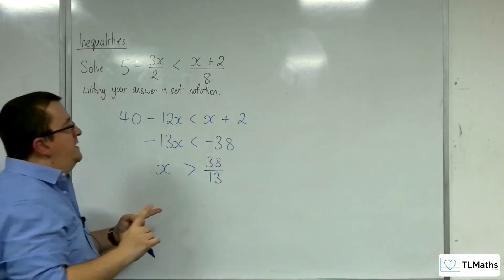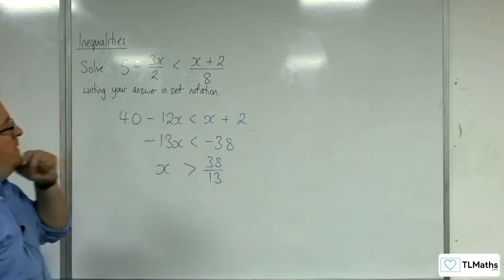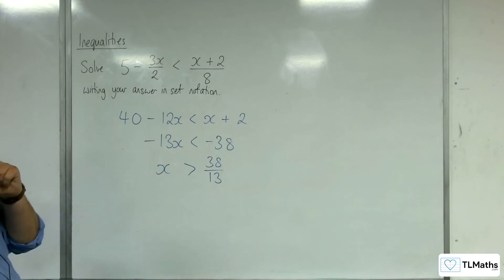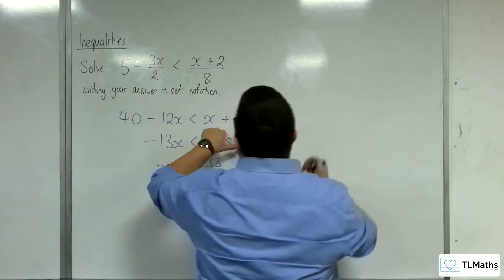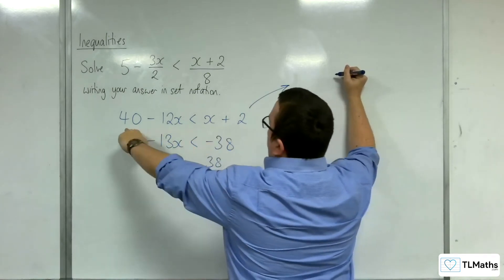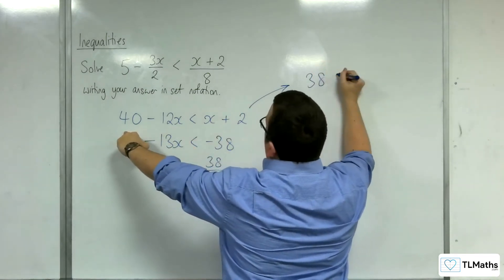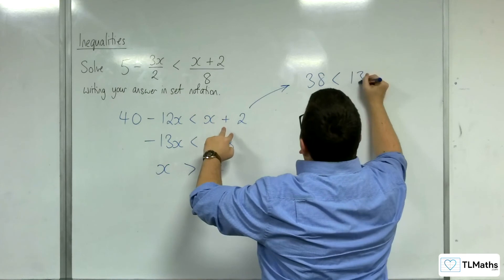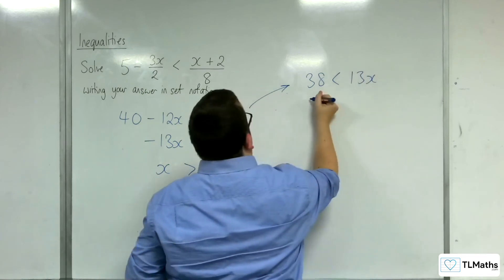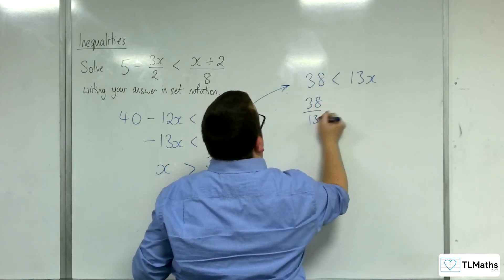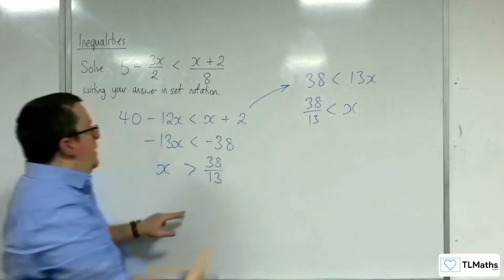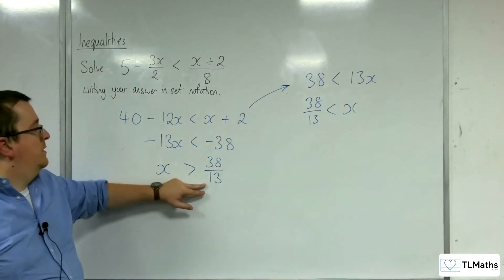The other alternative, as I was mumbling there previously, was just to add the 12x to both sides instead, and subtract 2 from both sides. So I get 38 < 13x, and then divide through by 13. And I get x > 38/13, which is the same thing.